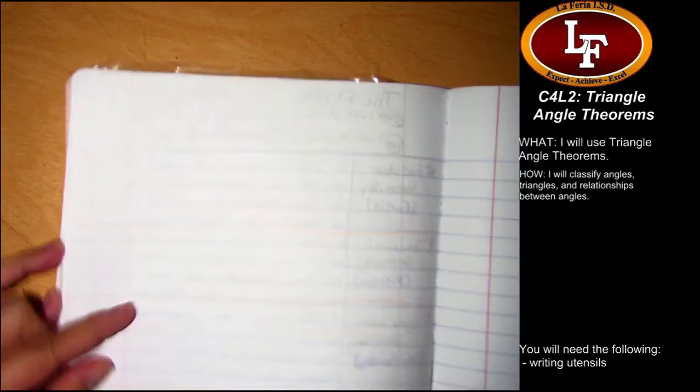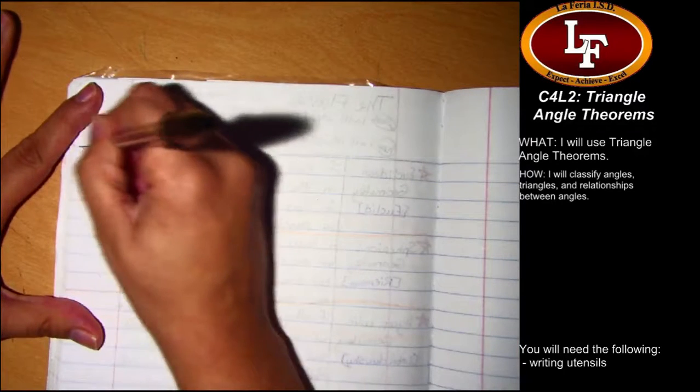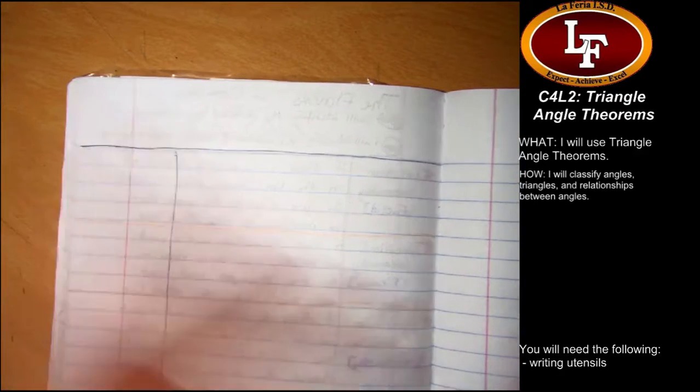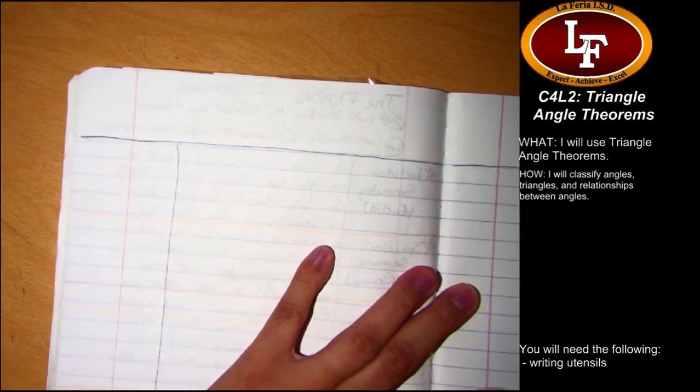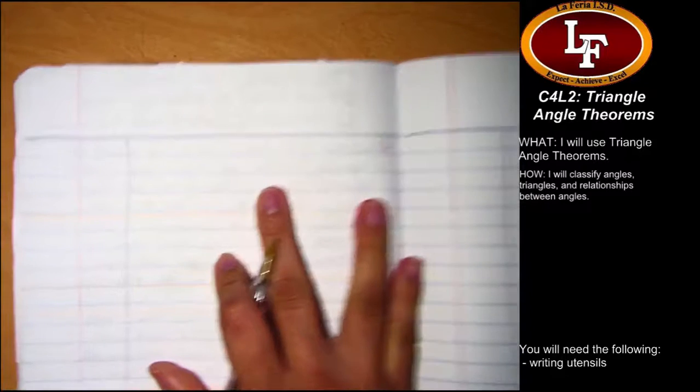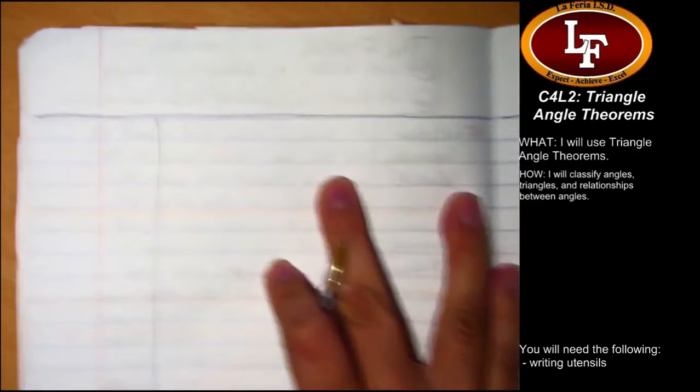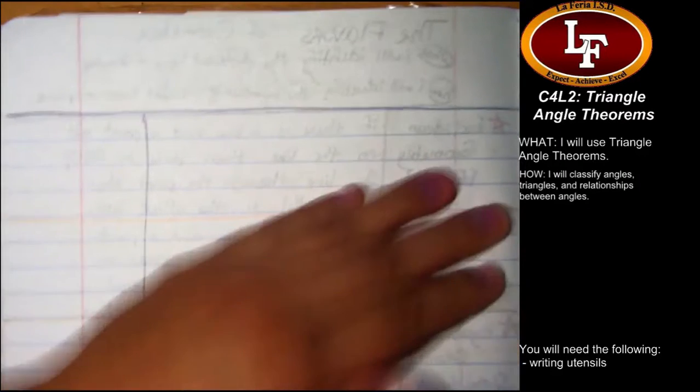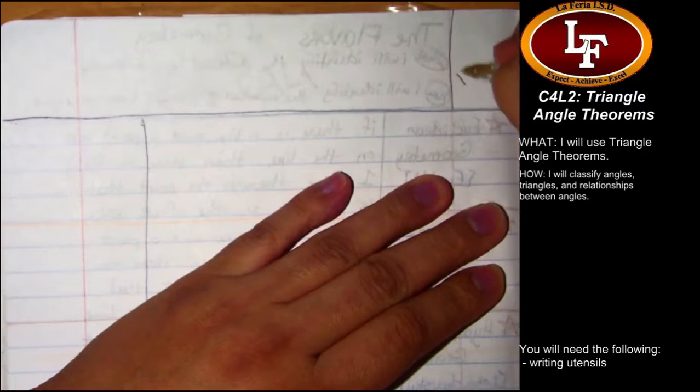So go ahead and go to the very next page. Set up your paper for notes. You will want two full pages for notes today. You do have a new lesson code, title, and objectives, so make sure you get those in. As always, they are just under the La Feria logo.